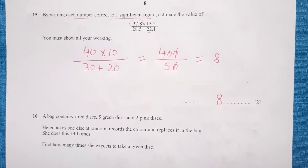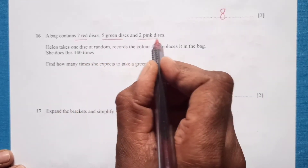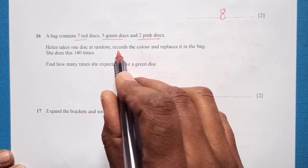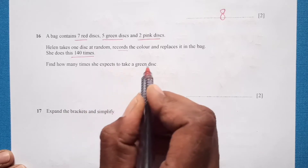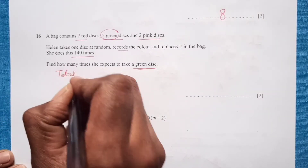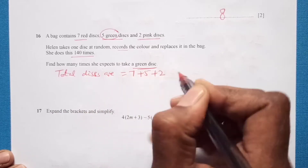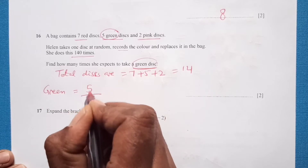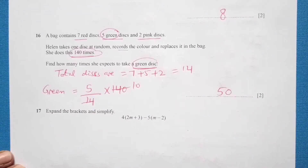Question 16: A bag contains 7 red discs, 5 green, and 2 pink. Helen takes one disc at random, records the color, and replaces it. She does this 140 times. The total number of discs is 7 plus 5 plus 2, which is 14. The expected number of green discs is 5 over 14 times 140, which equals 50.